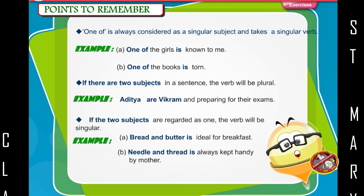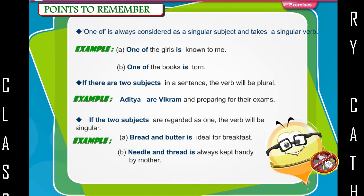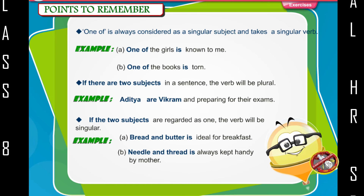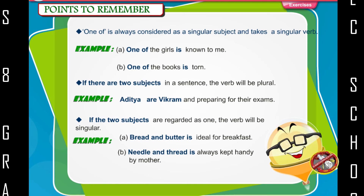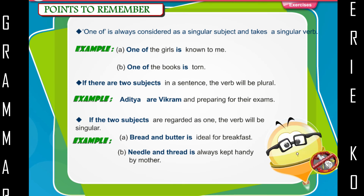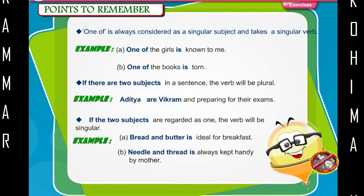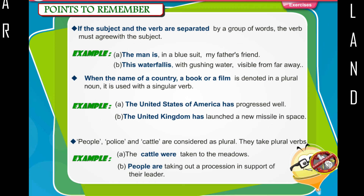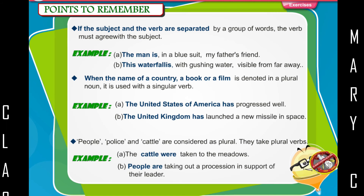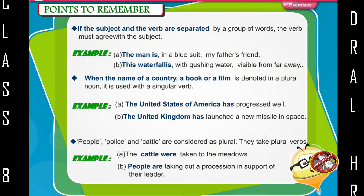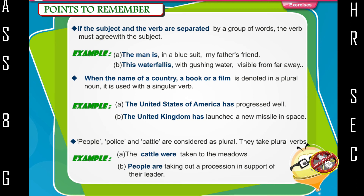If there are two subjects in a sentence, the verb will be plural. Example: Aditya and Vikram are preparing for their exams. If the two subjects are regarded as one, the verb will be singular. Examples: Bread and butter is ideal for breakfast. Needle and thread is always kept handy by mother. If the subject and the verb are separated by a group of words, the verb must agree with the subject. Examples: The man, in a blue suit, is my father's friend. This waterfall, with gushing water, is visible from far away.